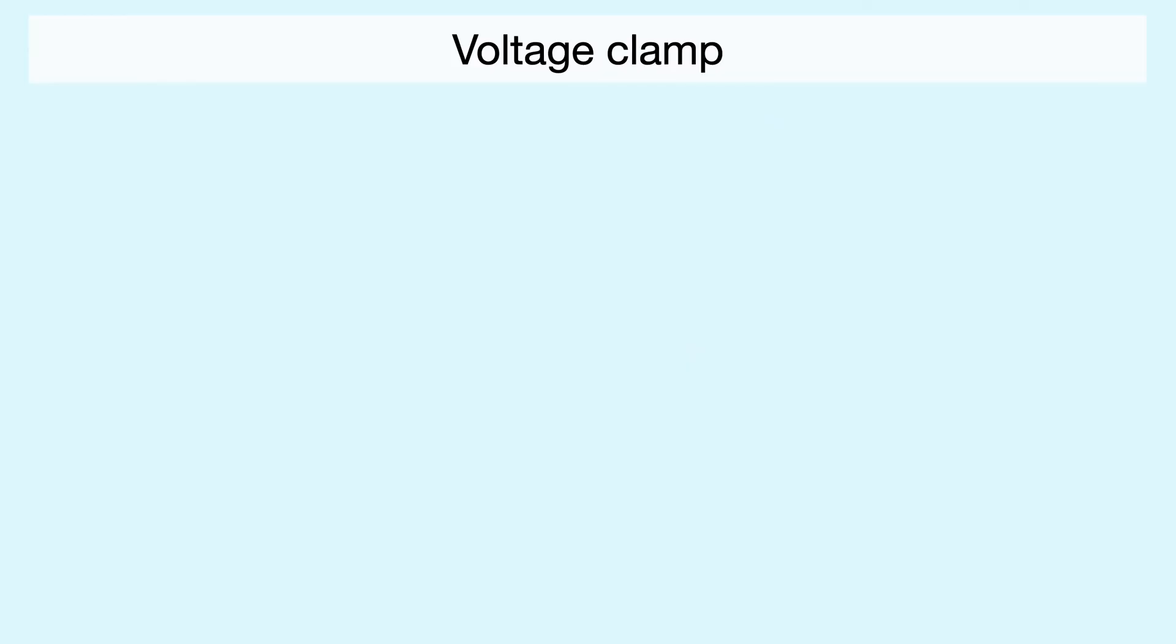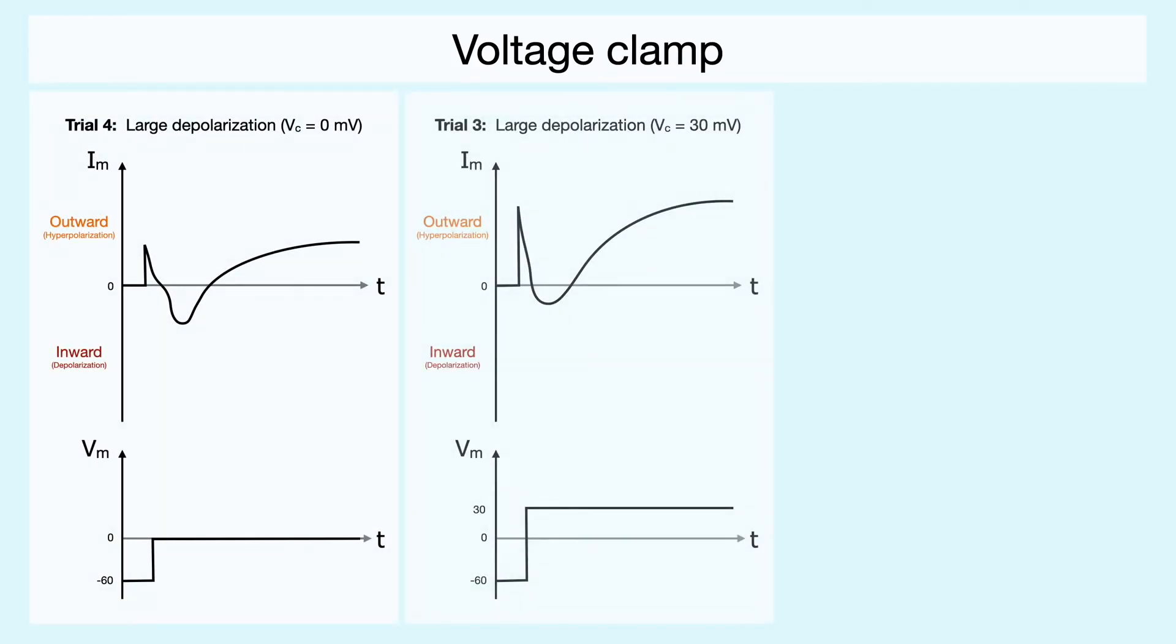To get more intuition about the process, one can perform the voltage clamp experiment at different values of command voltage. With each trial, you can notice that the inward current gets smaller and smaller as the command potential increases up to the point at 60 mV where it isn't even present anymore.